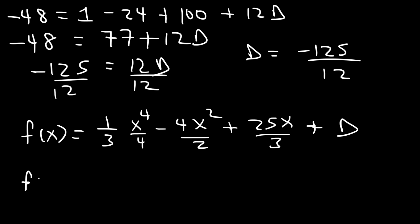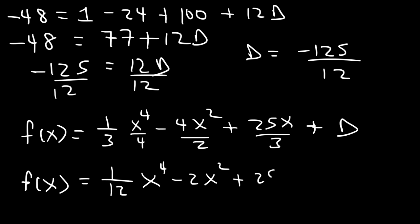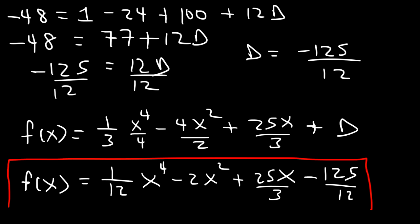So the final answer is f(x) equals one-twelfth x to the fourth minus 2x squared plus 25x over 3 minus 125 over 12. This is the solution to the differential equation. It was a bit longer than the other problems, but that's how you find it. That's it for this video, thanks for watching.